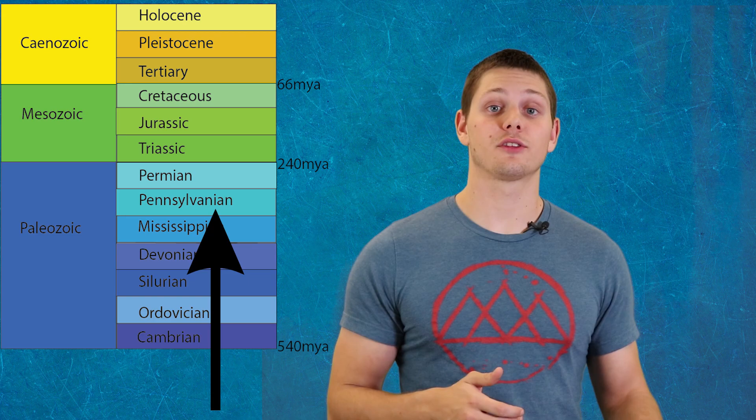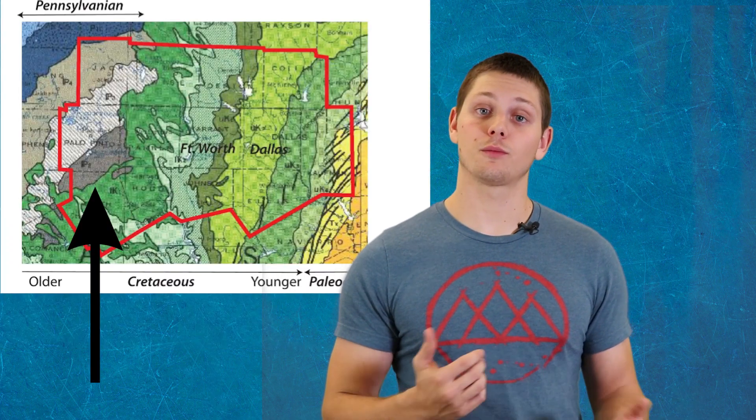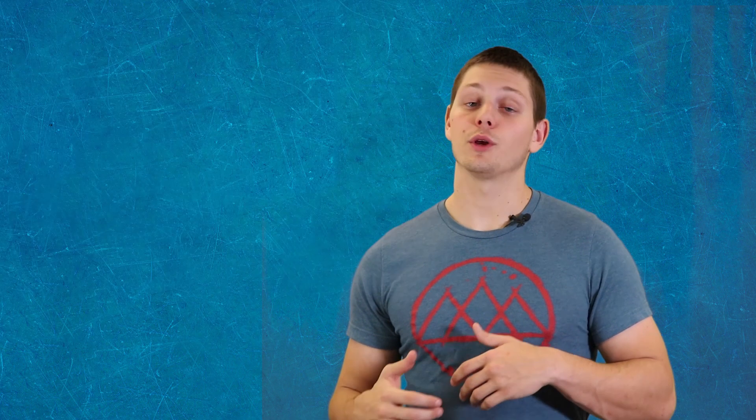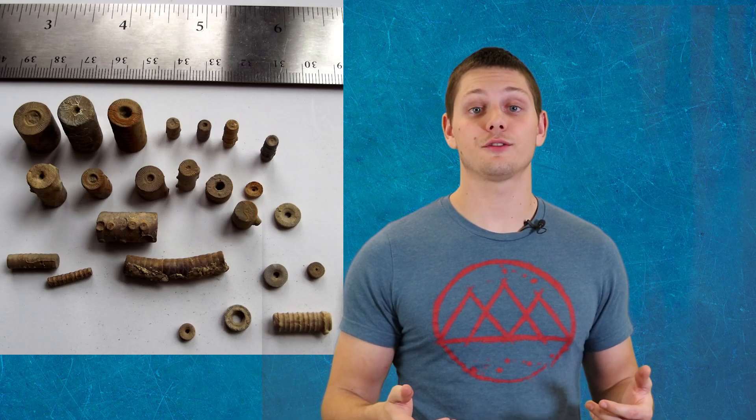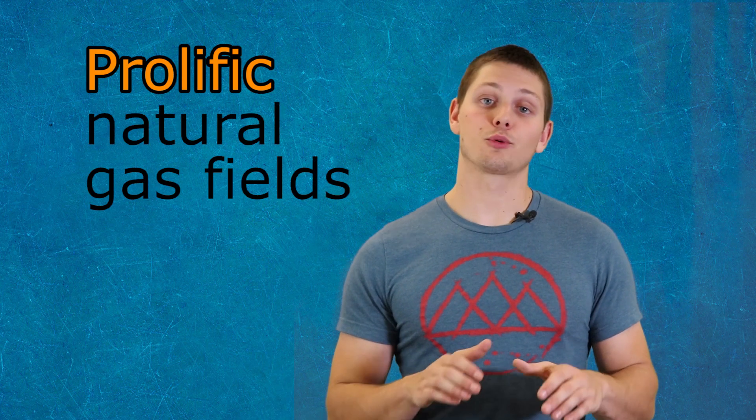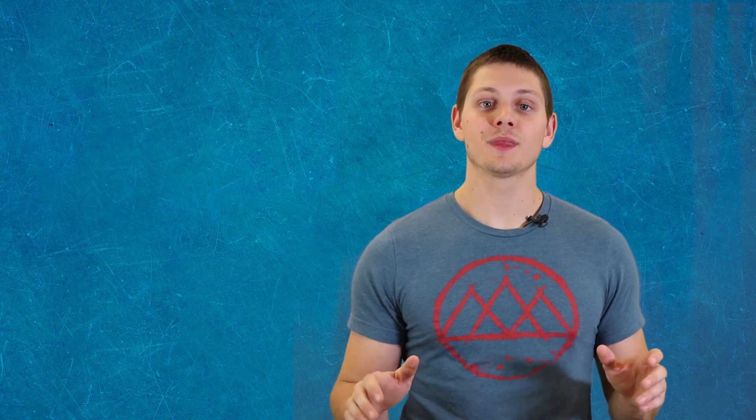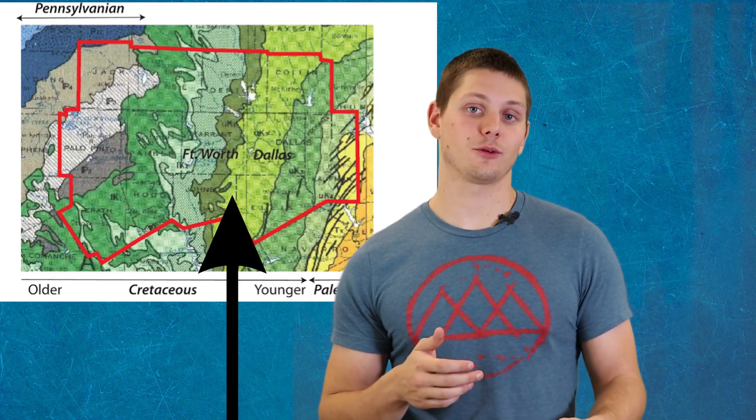All we can see today are sedimentary rocks of this Pennsylvanian age that are exposed in the westernmost part of the Metroplex, where you can climb walls of conglomerate and hunt for Pennsylvanian aged fossils at mineral wells. The Fort Worth Basin is home to the prolific natural gas fields of the Barnett Formation and is buried beneath the Cretaceous sediments in the heart of the Metroplex.